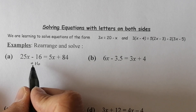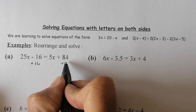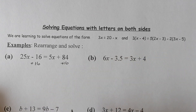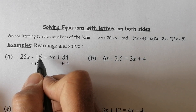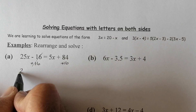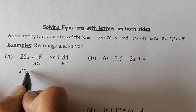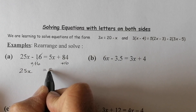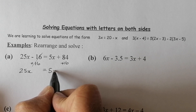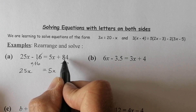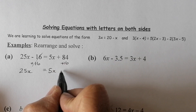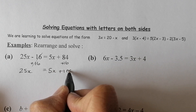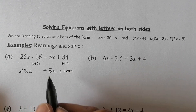If I add 16 to the left-hand side, I add 16 to the right-hand side. They cancel, leaving me with 25x. There's my equal sign, and I've got 5x on that side, with 84 plus 16 giving me 100.